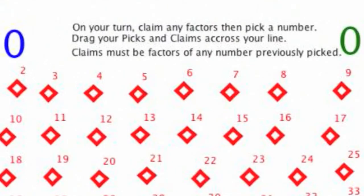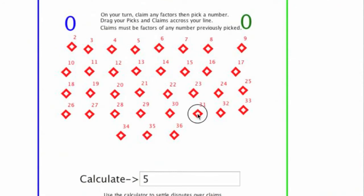The objective of the game is to score as many points as possible. If green goes first, they might drag 31 across the green line, giving them 31 points. There are no factors of 31, so the next person cannot claim anything.